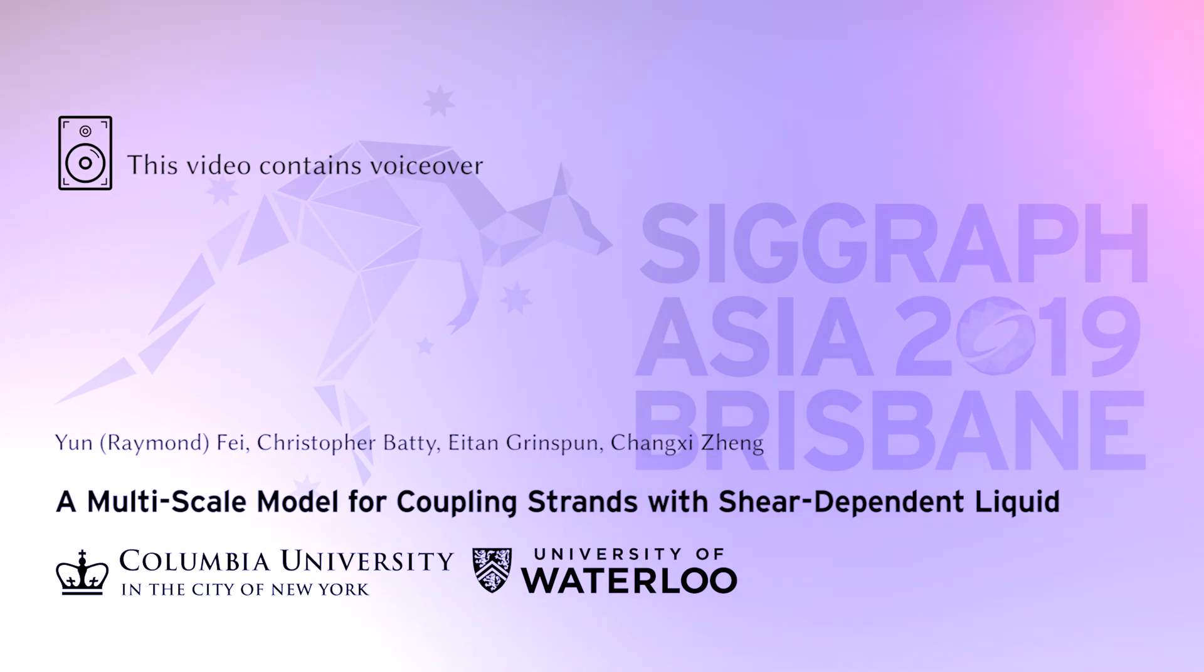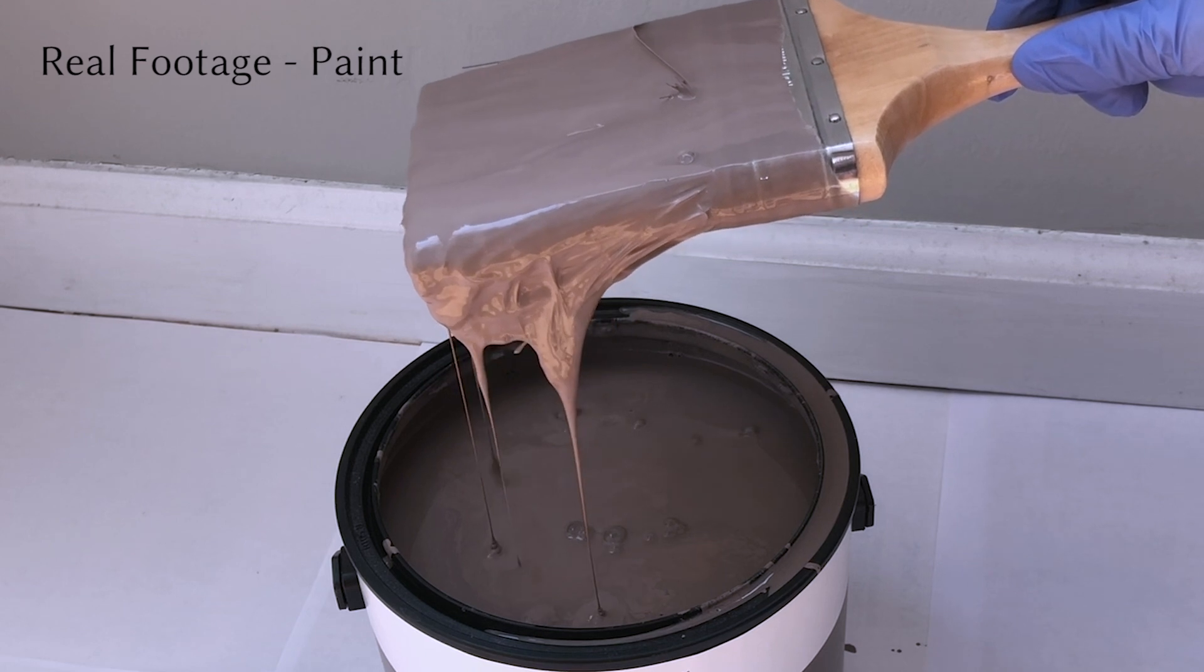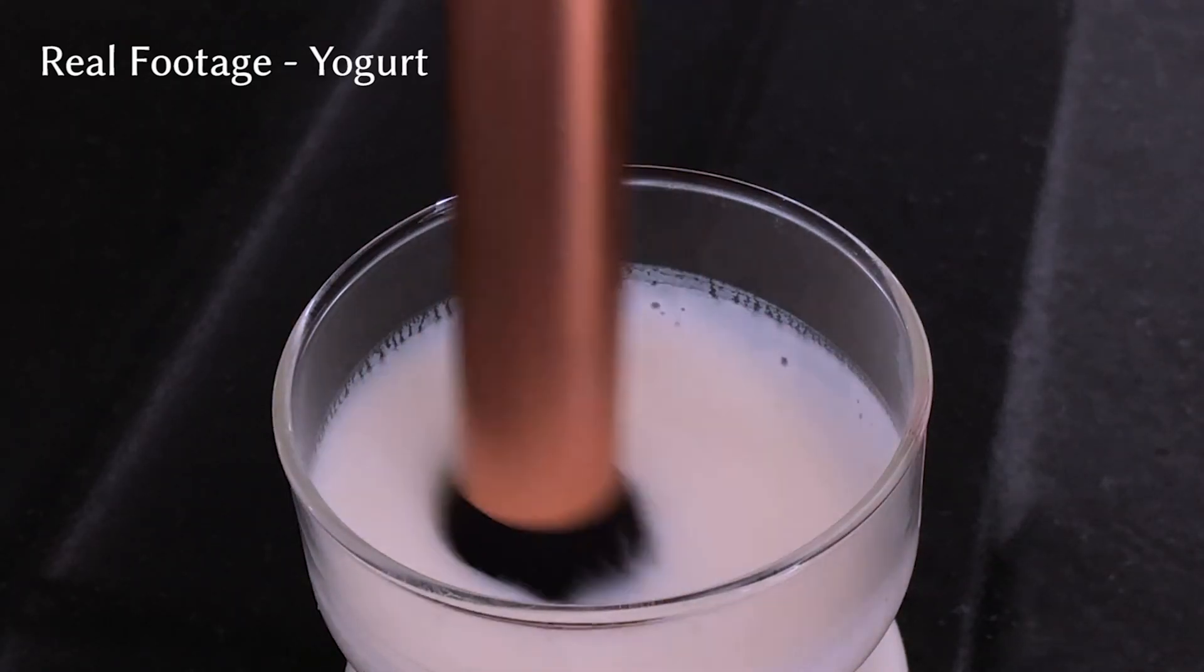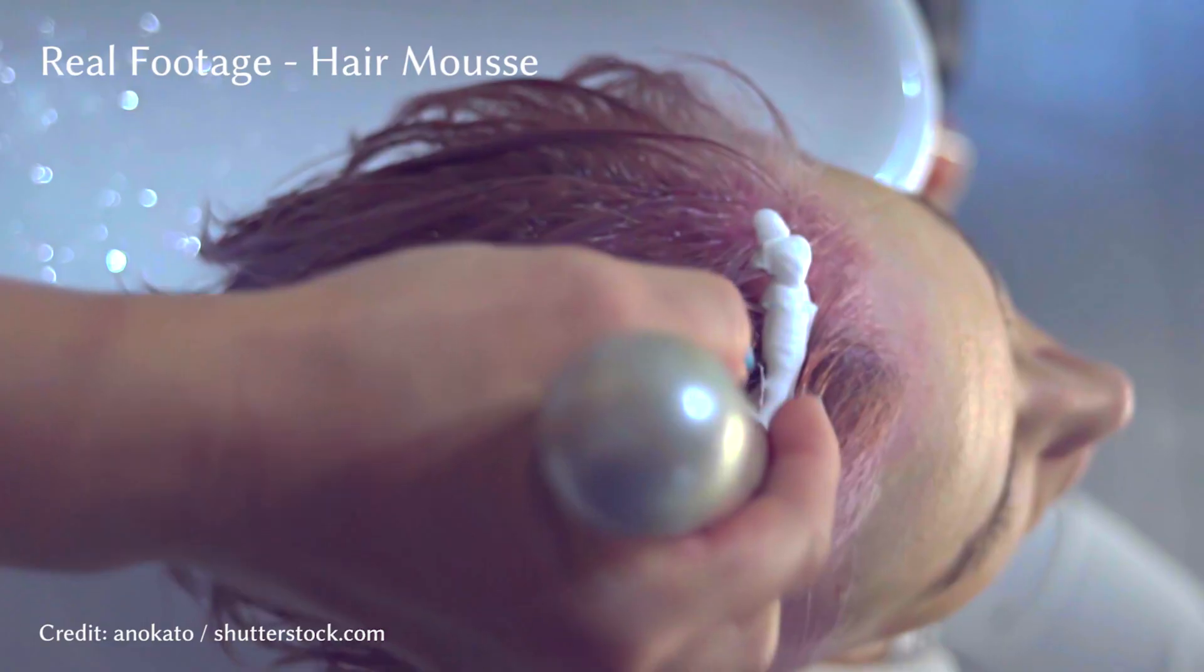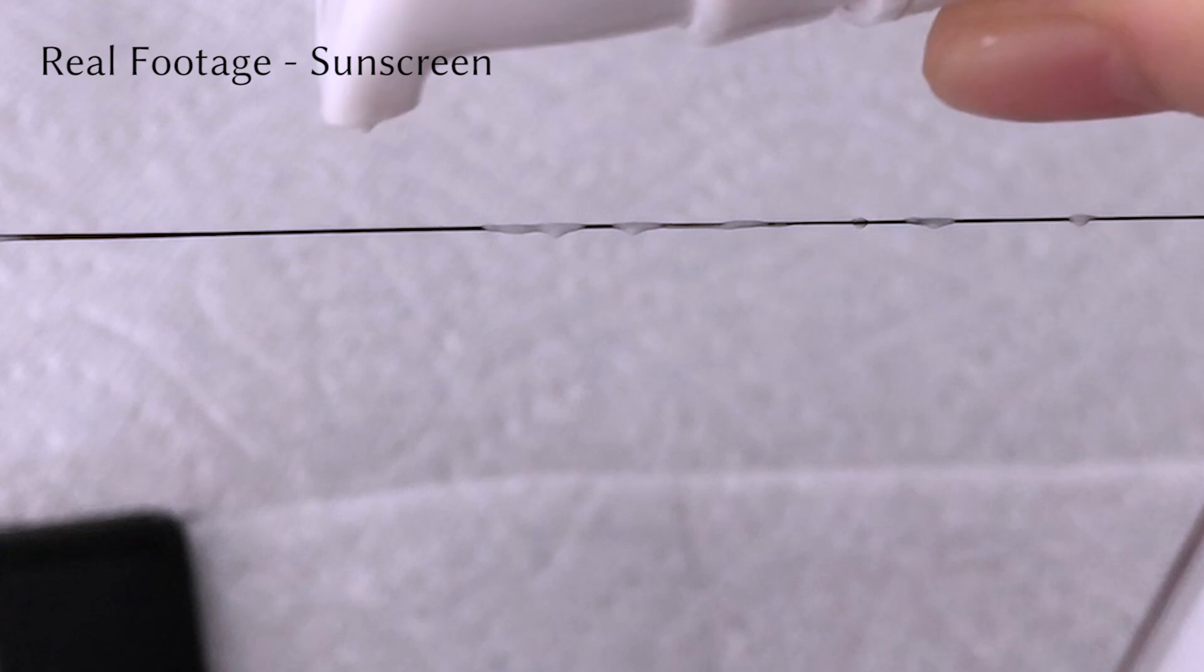We introduce a multi-scale model to couple slender elastic strands with shear-dependent fluid. Here we show some example footage, such as a brush dipped into paint, a brush swirling in yogurt, mousse poured onto human hair, and sunscreen squeezed over a bunch of strands.